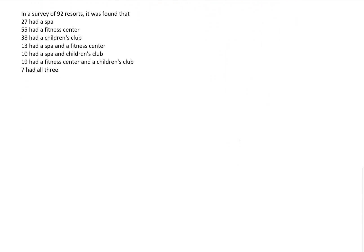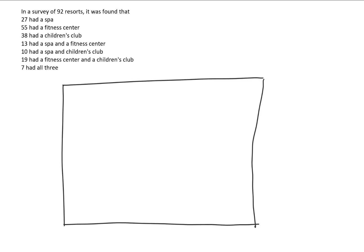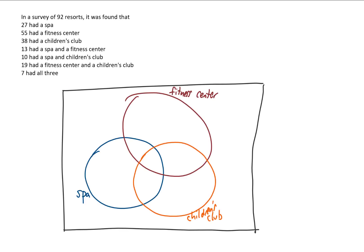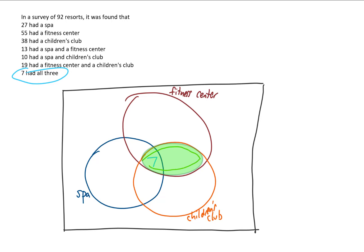Let's look at one more example. There was a survey of 92 resorts involving spas, fitness centers, and children's clubs — so we have three sets. Starting in the middle, seven resorts had all three: fitness center, children's club, and spa. Working outward, 19 resorts had both a fitness center and a children's club. We already have seven in the middle, so 19 minus 7 leaves 12 resorts in the region for fitness center and children's club only.